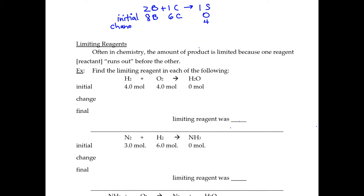So now we're going to call this the change line. We made four sandwiches because we used eight slices of bread. We made four sandwiches, we had zero to start with. How many cheeses are we going to need to make the four sandwiches? You could bridge from the bread or from the sandwich. Bridging from the bread: eight divided by two times one is four. So we would need four cheeses — minus four cheeses — to make the four sandwiches. When we're all done, the final line is what we have left: no bread, two cheeses left over, and four sandwiches made.